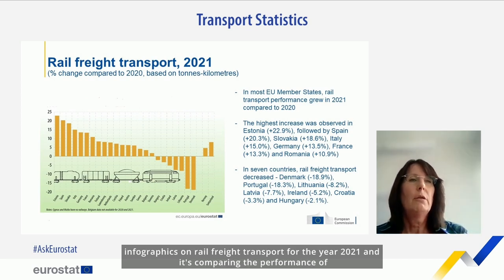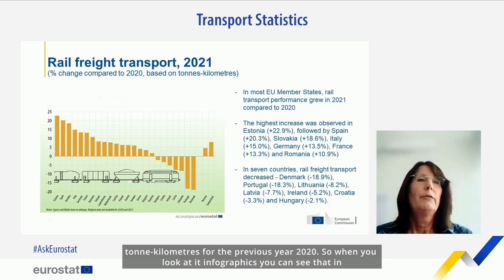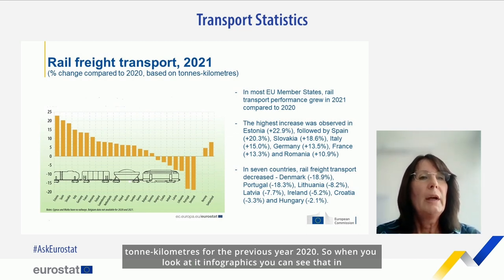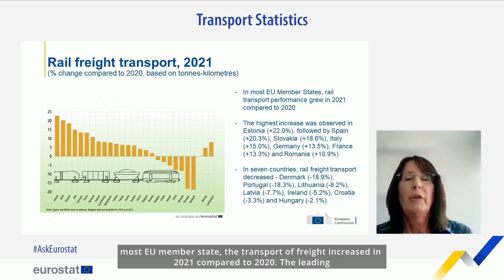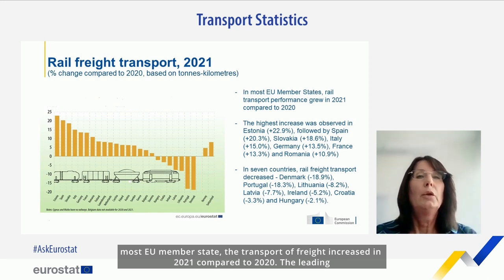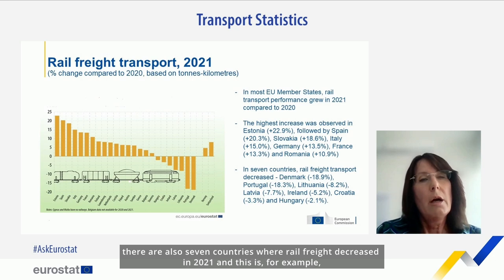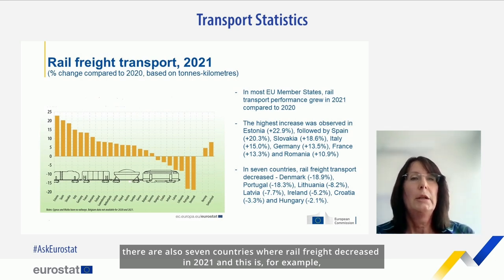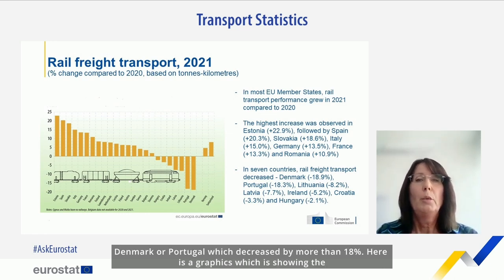This is an infographic on rail freight transport for the year 2021, comparing performance in ton kilometres with the previous year 2020. In most EU member states, the transport of freight increased in 2021 compared to 2020. The leading countries are Estonia and Spain, where freight transport increased by more than 20%. However, there are also seven countries where rail freight decreased in 2021 — for example Denmark or Portugal, where it decreased by more than 80%.